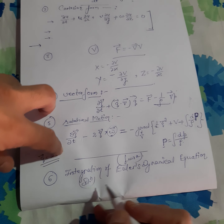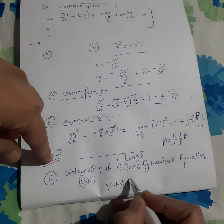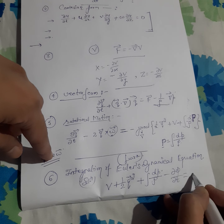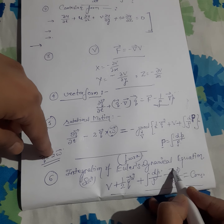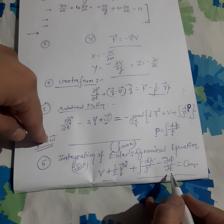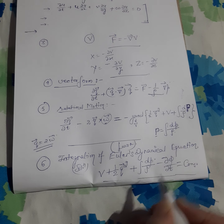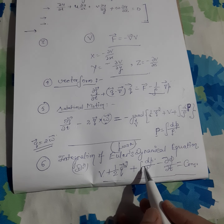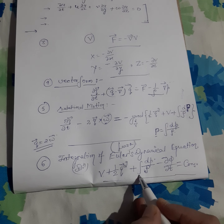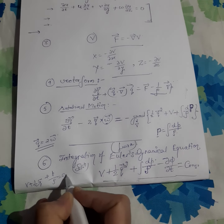Next, integration and solution of Euler dynamical equations: V + ½q² + ∫dp/ρ − ∂φ/∂t = constant. For steady motion, differentiation with respect to t of any quantity equals 0. So the ∂φ/∂t term vanishes, giving: V + ½q² + ∫dp/ρ = constant. For incompressible fluids, ρ is constant, so this becomes: V + ½q² + p/ρ = constant.